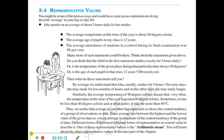We realize that average is a number that represents or shows the central tendency of a group of observations or data. Since average lies between the highest and the lowest value of the given data, we say average is a measure of the central tendency of the group of data. Different forms of data need different forms of representative or central value to describe it. One of these representative values is the arithmetic mean.